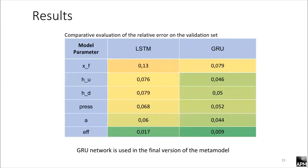Here are the results of LSTM and GRU models. You can see that the GRU network shows the best results. The maximum error is the error of determining the length of the fracture, which is less than 8%. The error of determining fluid efficiency is less than 1%. The gated recurrent unit recurrent neural network was used in the final version of the metamodel.